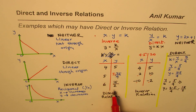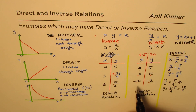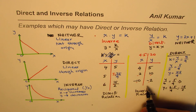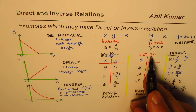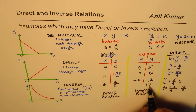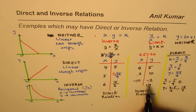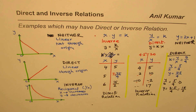That is how we can build values to make a relation direct or inverse. Now as a test — since we worked with the value 20 for the inverse relation — if y equals 17, find the value of x. That is the exercise for you. I'm Alil Kumar and I hope this video helps you understand direct and inverse relations. You can always share and subscribe. Thank you and all the best.